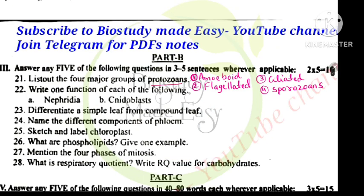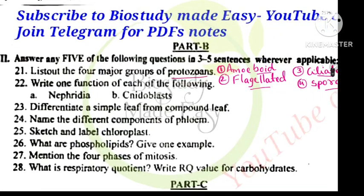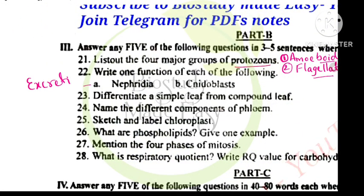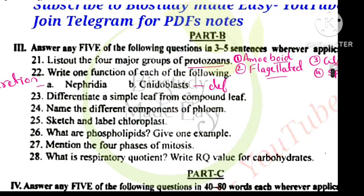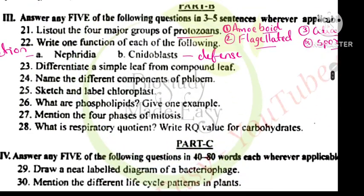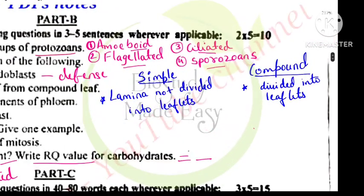Four major groups of protozoans: amoeboid, flagellated, ciliated, sporozoans. Function of nephridia is excretion. Cnidoblast for defense and food capture. Simple leaf from compound leaf difference. Simple leaf arises at a node, lamina is not divided into leaflets. But compound leaf, lamina is divided into leaflets.